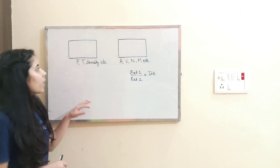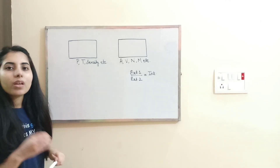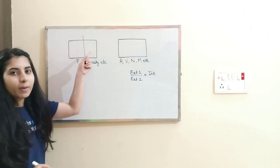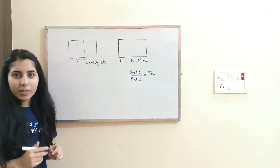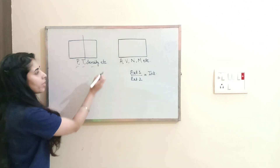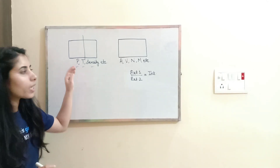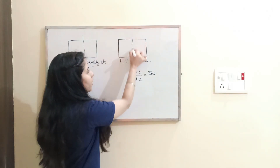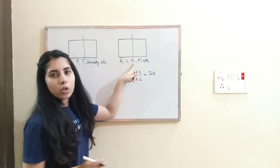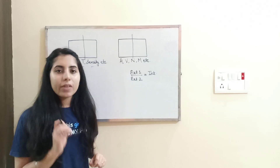Here are some examples. If we consider a system and divide it into equal parts, the variables which will not get changed are pressure, temperature, and density (number density) — these are known as intensive variables. The variables which will get changed after dividing the system into two equal parts or more are area, volume, number of particles, and mass — these are known as extensive variables.